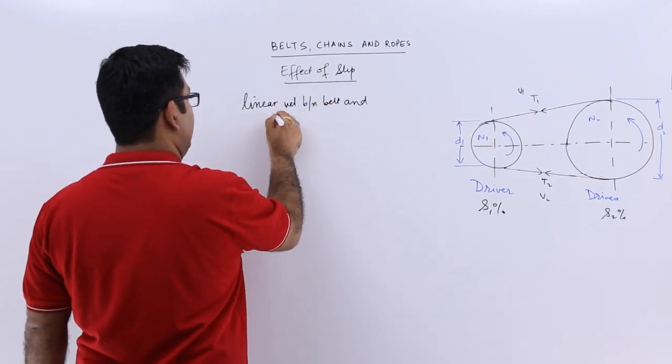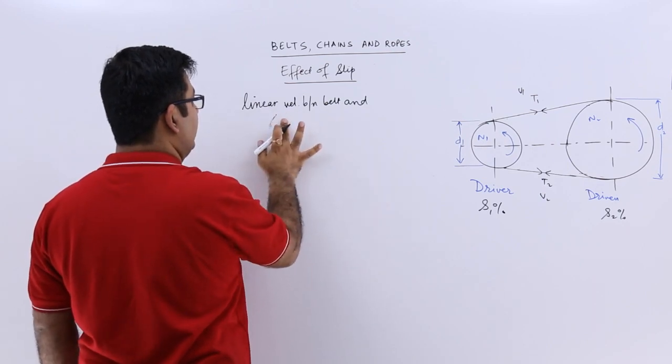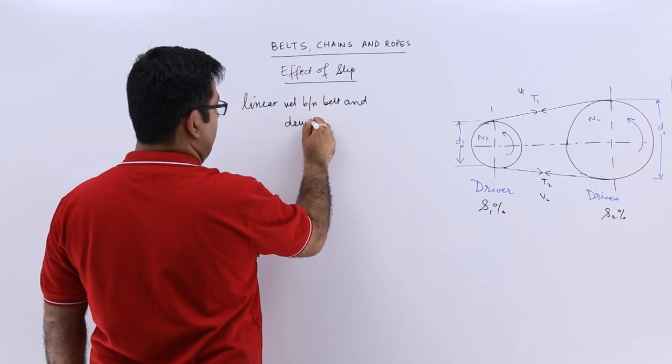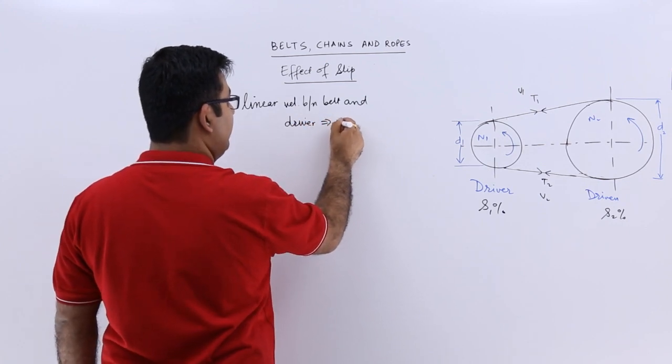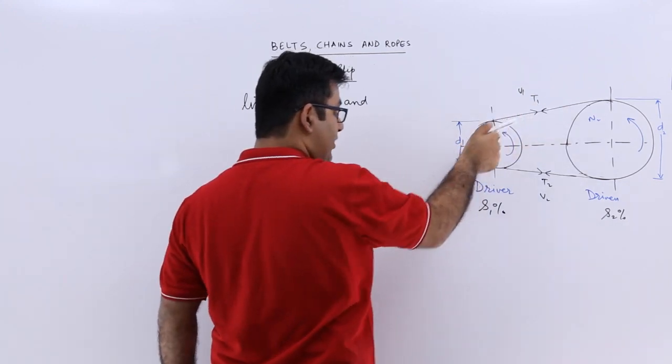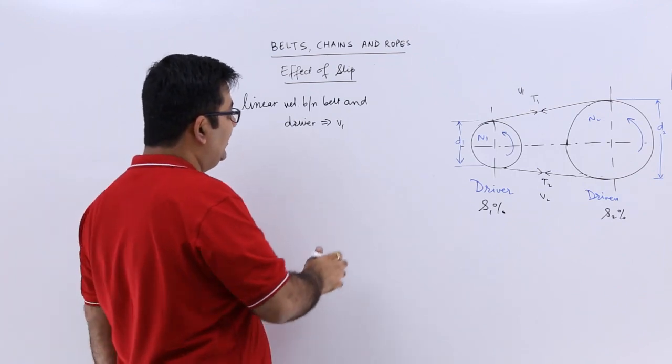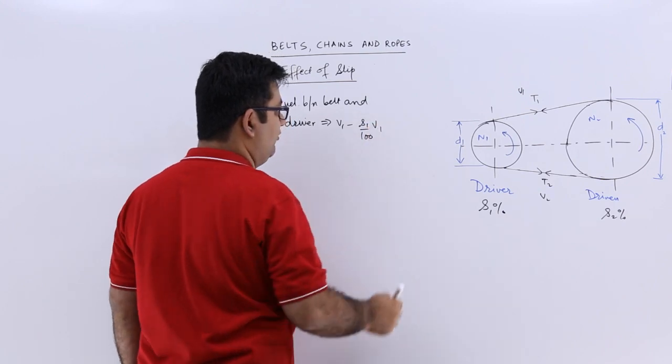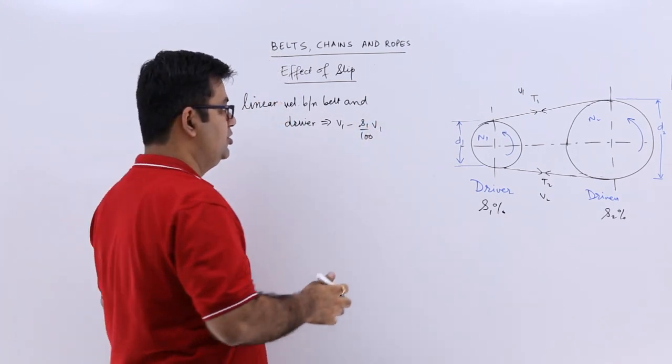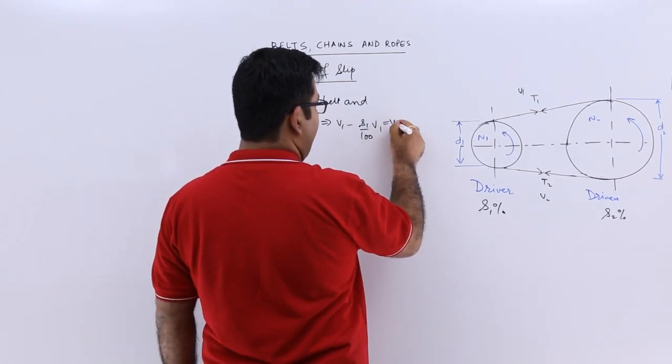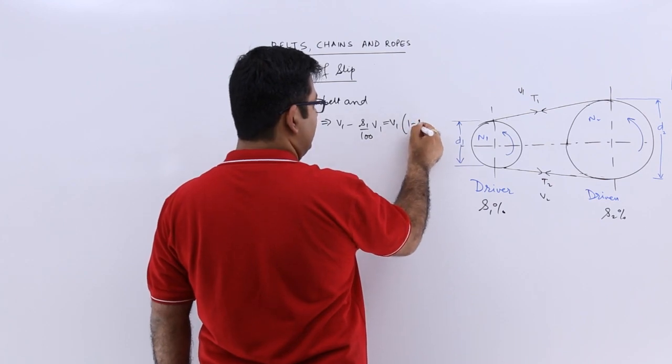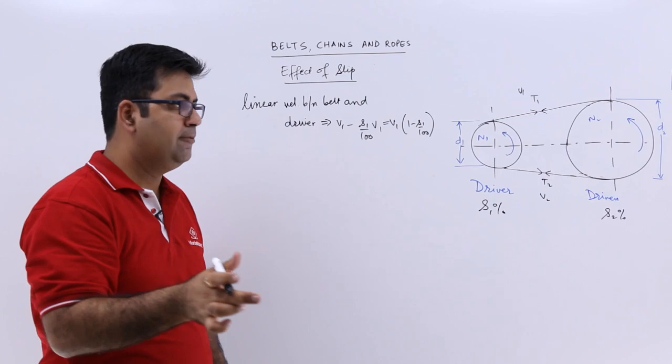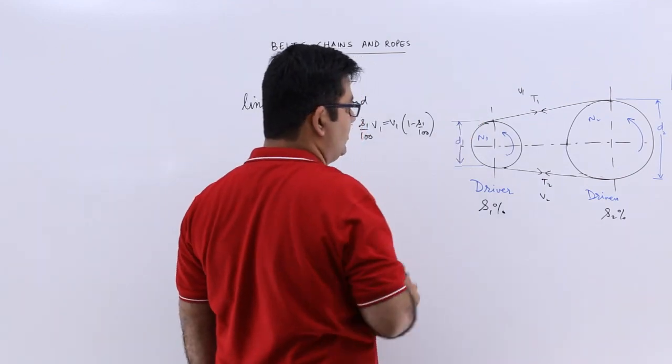V1 is coming in but there is a reduction of s1 percentage of the value of v1, so I can say this will be v1 times (1 minus s1/100). So this is the velocity which is actually passing over this driver, not v1, because there is a certain amount of destruction of that velocity due to the slip.